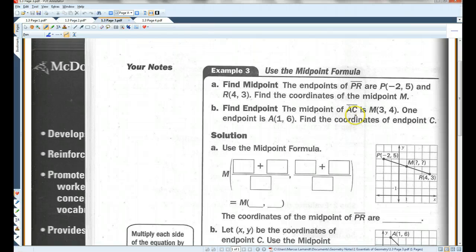So for example, if we are trying to find the midpoint between negative 2, 5, and 4, 3, this is how we do it. The X coordinates are negative 2 and 4. So add them together and divide by 2. The Y coordinates are 5 and 3. So add them together and divide by 2. Negative 2 plus 4 is positive 2. Positive 2 divided by 2 is 1. 5 plus 3 is 8. 8 divided by 2 is 4. So the coordinates of the midpoint are 1, 4.